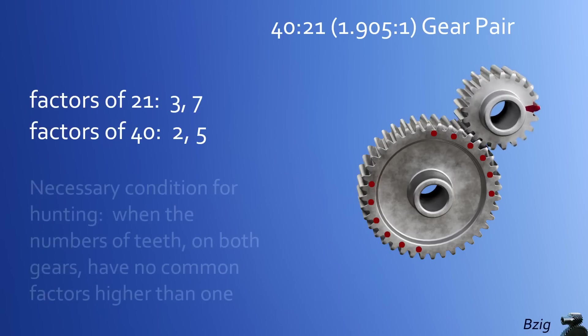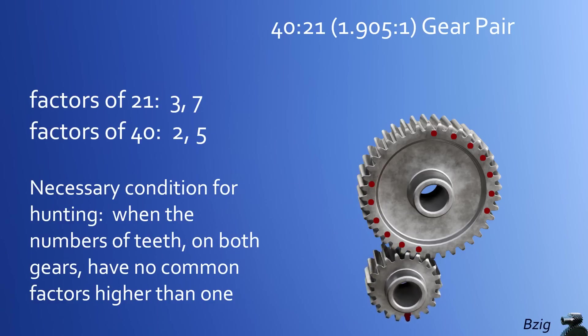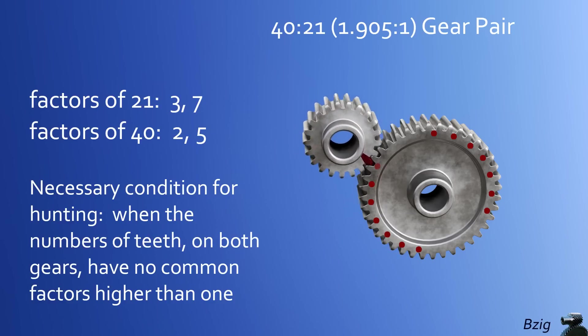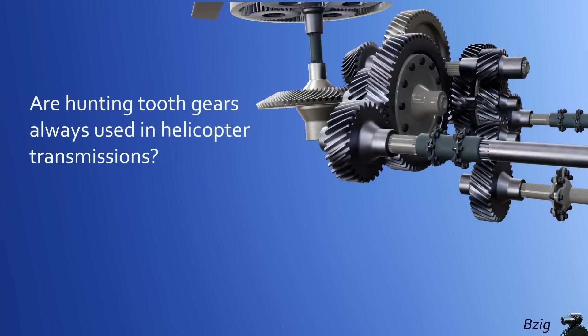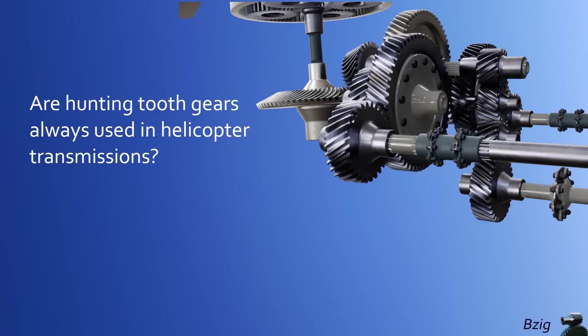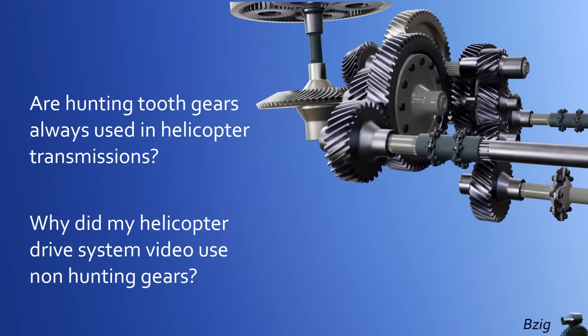40-to-21 is a hunting-tooth gear combination, and the necessary condition to achieve hunting is defined as when the numbers of teeth on both gears have no common factors higher than 1. Now that we understand hunting-tooth gears, two questions remain. Are hunting-tooth configurations always used in helicopter transmissions? And why did I make the original video using integer gear ratios?